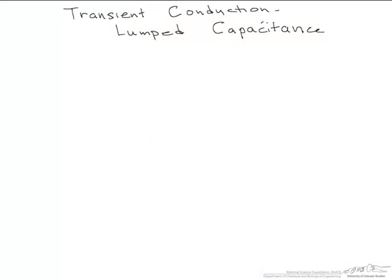This screencast considers transient conduction, in particular the method called lumped capacitance. What happens if the boundary conditions change with time for an object? Other parameters do as well. An example is a solid whose thermal environment changes suddenly.